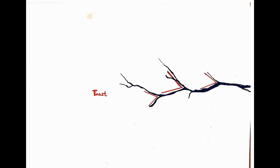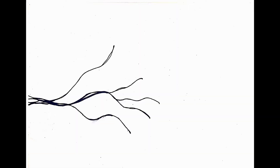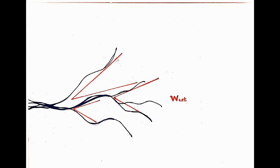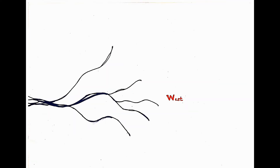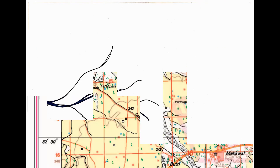Tributaries meet the main river in the east direction, so the direction of the river is east. In the last case, streams flow towards the west direction. I hope you are ready to practice some examples from topographical maps.